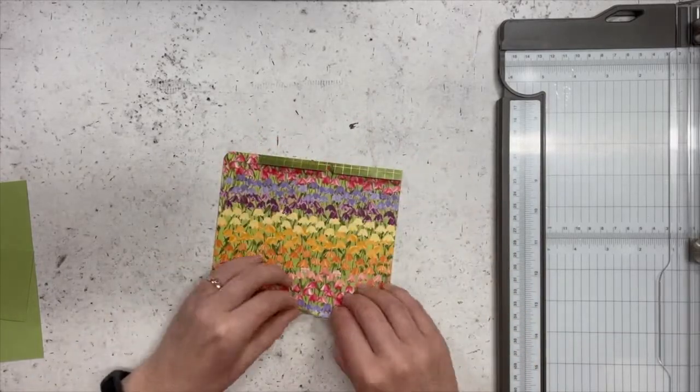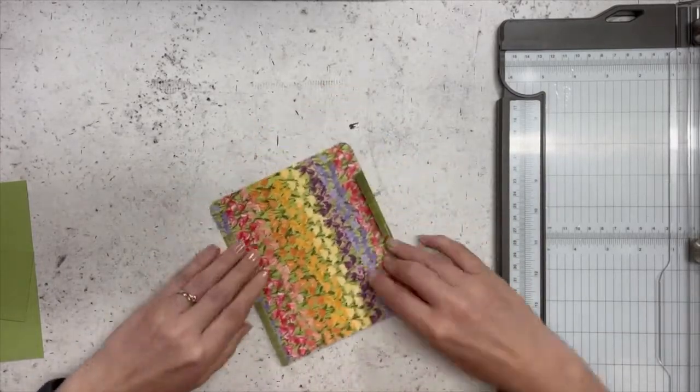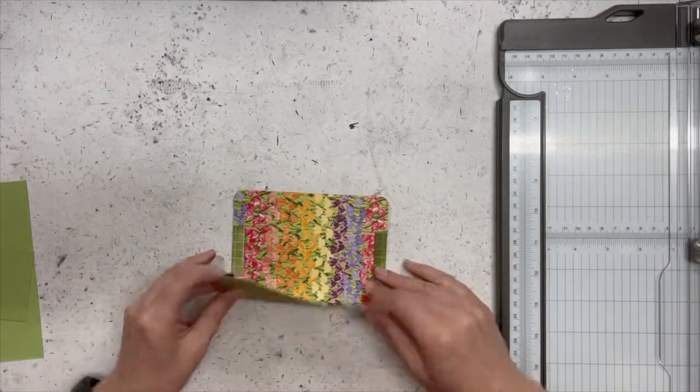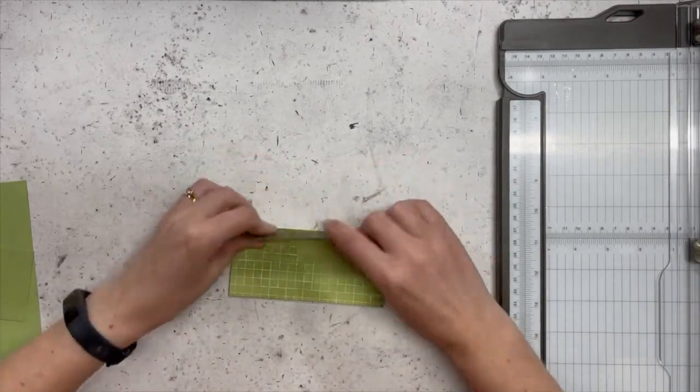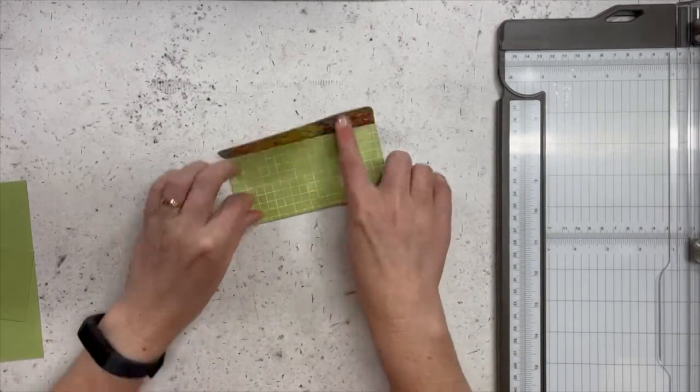So now I'm just going to fold all my score lines, fold those little flaps in, and it's actually going to fold up like this and down like that. So we've got a little pouch going on.